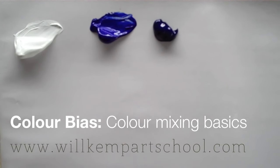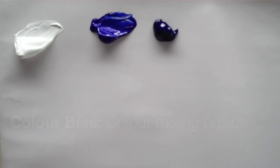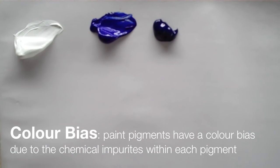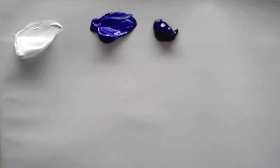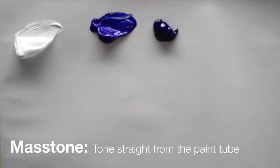Morning class, today we're going to have a look at colour bias between two blues. Every colour has a colour bias towards one way or the other on the colour wheel. It's harder to see though when you look at a colour in its mass tone.